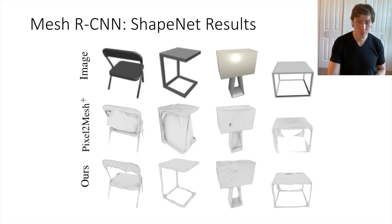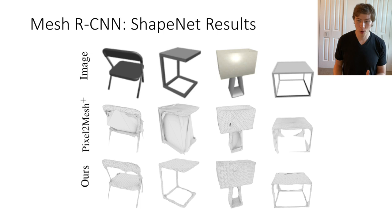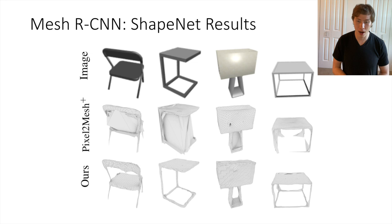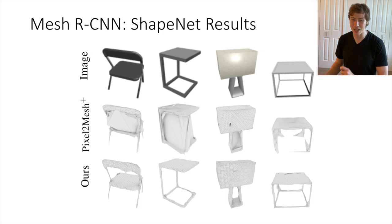Where MeshRCNN really shines is in the qualitative results. Looking at predictions from Pixel2Mesh — which is constrained to topologically sphere-like predictions — it cannot capture holes in objects like the hole in the back of a chair, the bottom of a lamp, or a hole in a table. Our model, using the hybrid shape architecture of going through voxels and then refining meshes, is able to more properly model these very complex topologies.